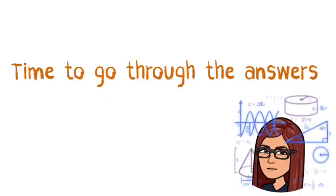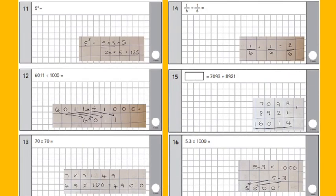Okay, time to go through the answers then. So the first question here that we've got is five cubed. Now remember that is not five times three, that is multiplying the same number together three times. So it's actually five times five times five. Five times five is 25, 25 times five is 125.